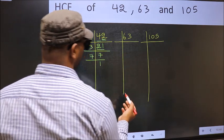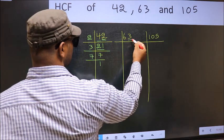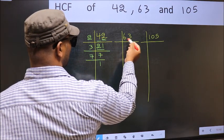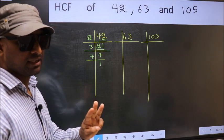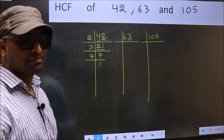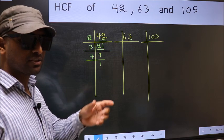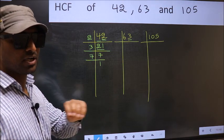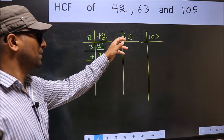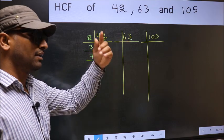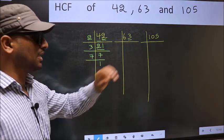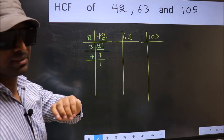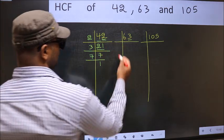Now the other number. Last digit 3, not even, so not divisible by 2. Next prime number, 3. To check divisibility by 3, we should add the digits. What I mean is 6 plus 3, we get 9 and 9 is divisible by 3. So this number also divisible by 3. So take 3.